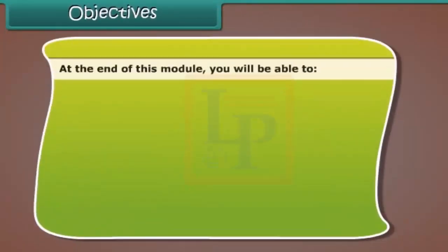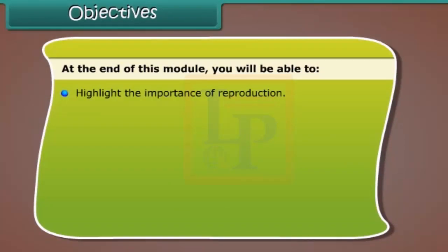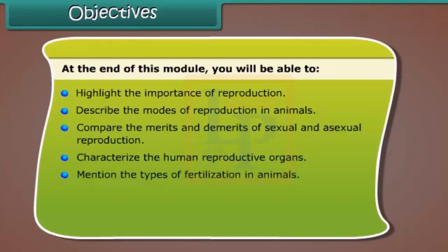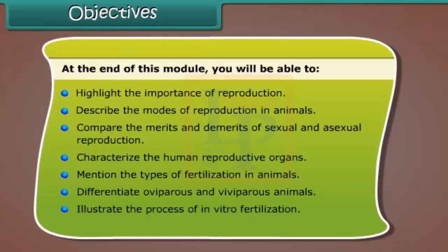At the end of this lesson, you'll be able to: highlight the importance of reproduction; describe the modes of reproduction in animals; compare the merits and demerits of sexual and asexual reproduction; characterize the human reproductive organs; mention the types of fertilization in animals; differentiate oviparous and viviparous animals; illustrate the process of in vitro fertilization; and explain the phenomenon of cloning.